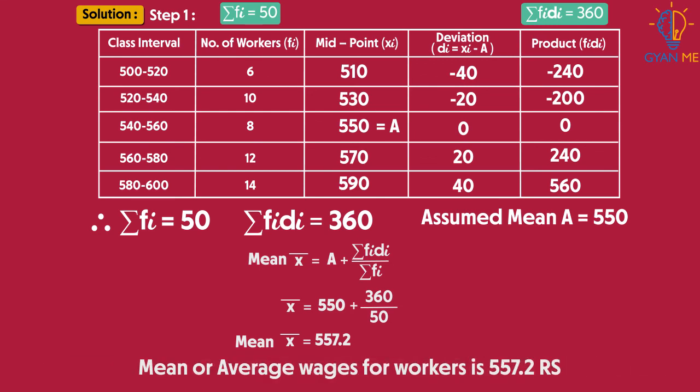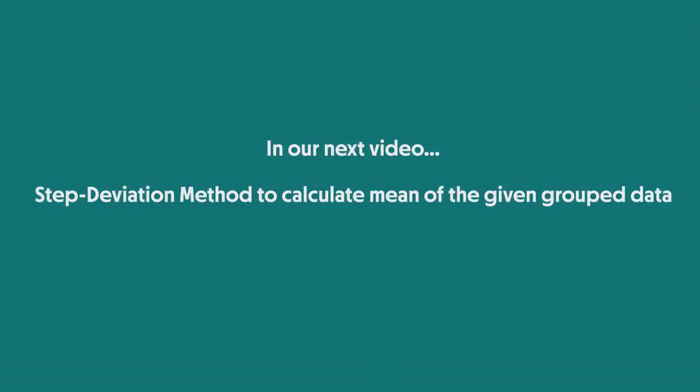Now, students, the mean or average wages for workers is 557.2 rupees. This is how we calculate the mean of any given grouped data using assumed mean method. In our next video, we will learn about another method, the step deviation method, to calculate mean of given grouped data.